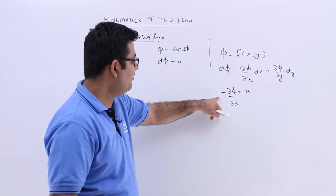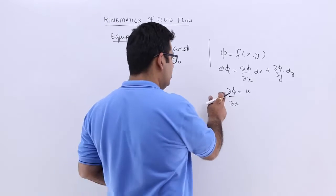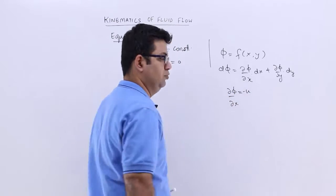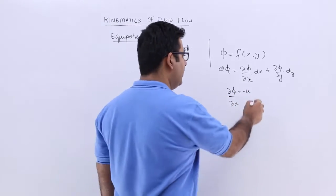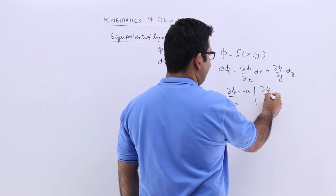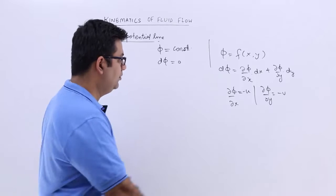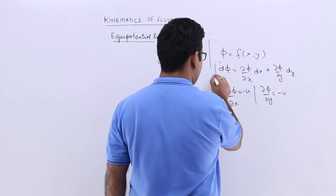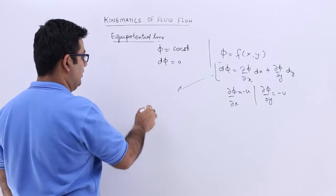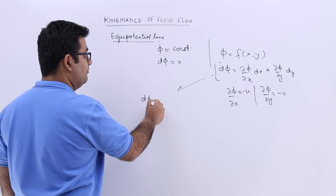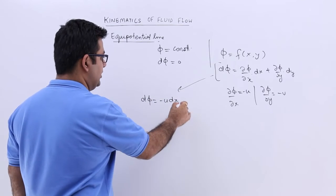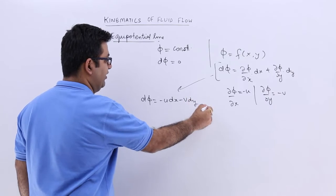This means that curly phi by curly x is equal to minus u. Similarly, I will get curly phi upon curly y as minus v. So, I will put both of these values in this equation. So, that equation would become d phi is equal to minus u dx minus v dy.